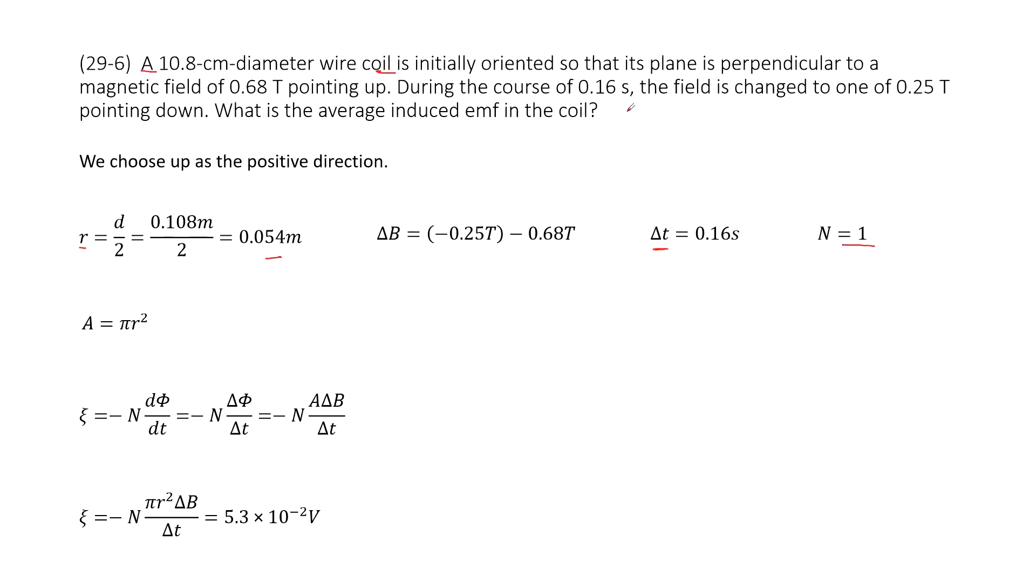The next one, a little bit difficult, is the magnetic field dance. So as we talk about, this magnetic field just changes direction. Initially, it is 0.68T pointing up. Finally, it is 0.25T pointing down.